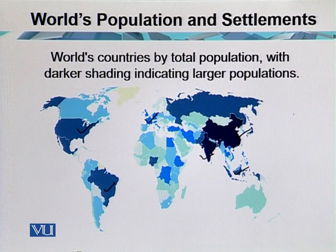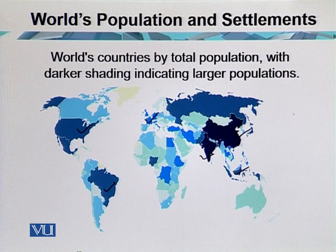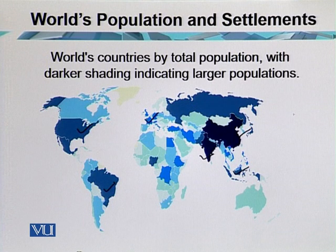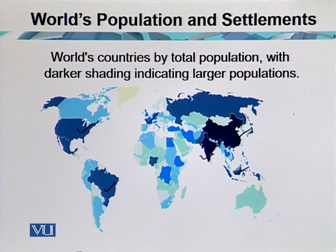Those are the major clusters of world human population. The darkly shaded areas indicate population higher than neighboring regions. The best example is China, which is the most populous country in the world, and the second is India, which is in South Asia. These densely populated areas are where we have major clusters.